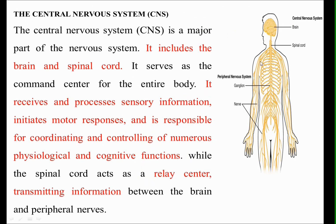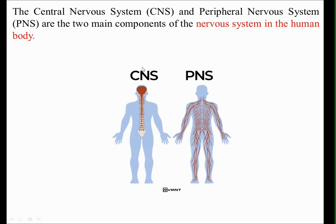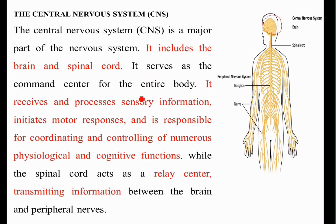The central nervous system is the major part of the nervous system. It includes the brain and the spinal cord. The brain is connected with the spinal cord, and together they serve as the command center for the entire body. The CNS receives and processes sensory information to initiate motor responses.